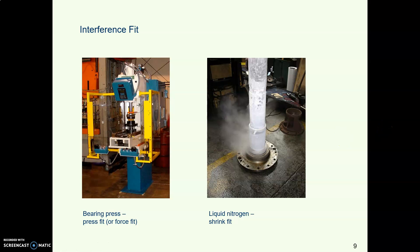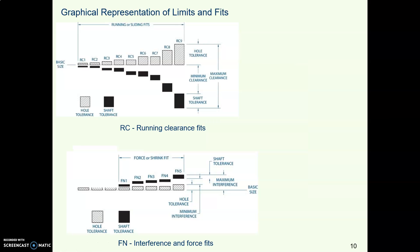With the most extreme case of interference fit you might actually have to freeze your part. This is a shaft. You might freeze it in liquid nitrogen which as you know is really really cold. So you submerge your part in a tank of liquid nitrogen for 24 hours. And what happens when something is cold it shrinks it gets smaller and smaller. And then after 24 hours you take it out you carefully put it into the thing it goes into and when it comes back to room temperature those two pieces are fixed together as if they were one piece.